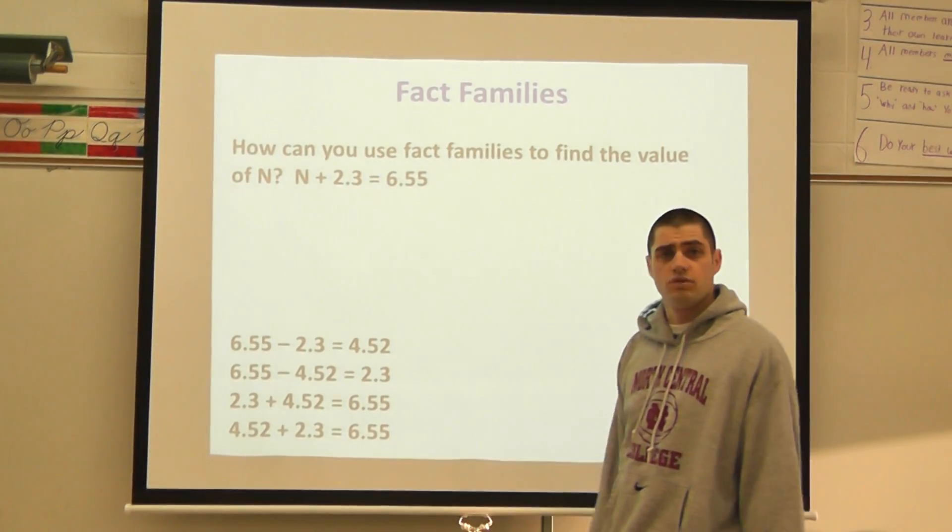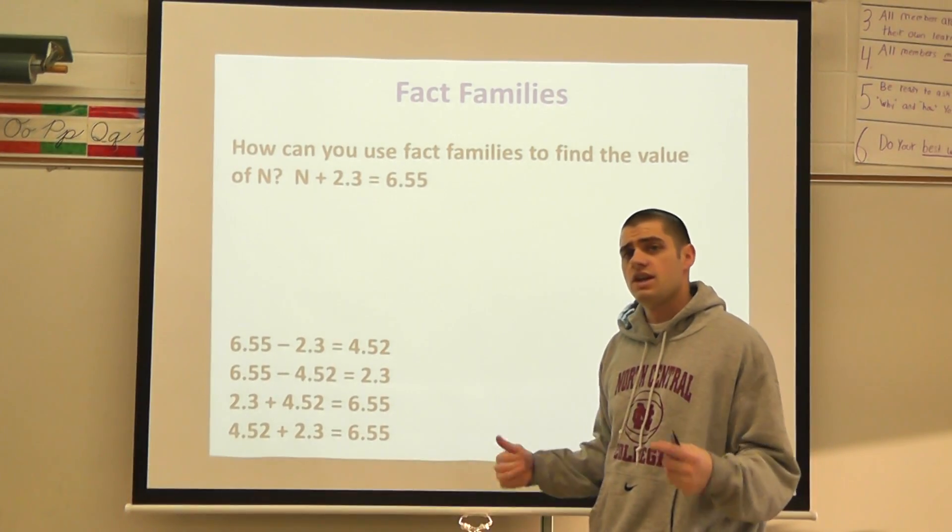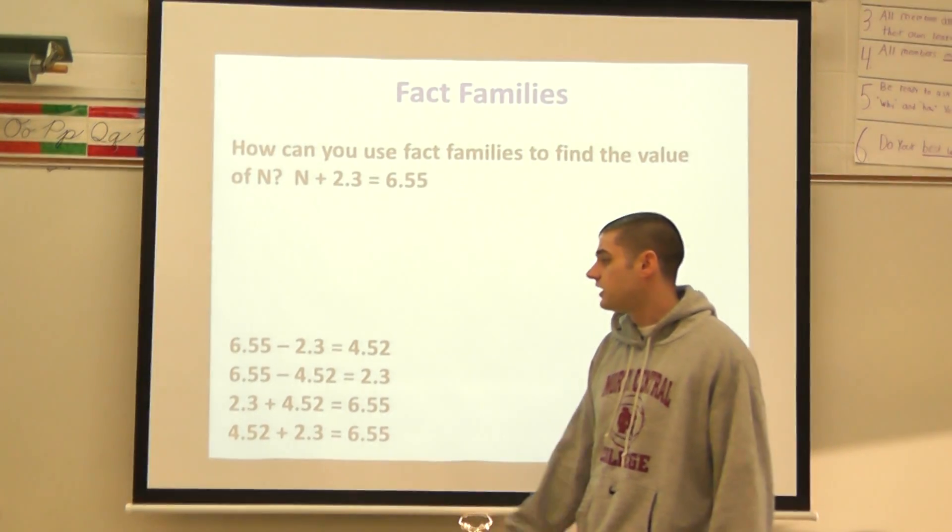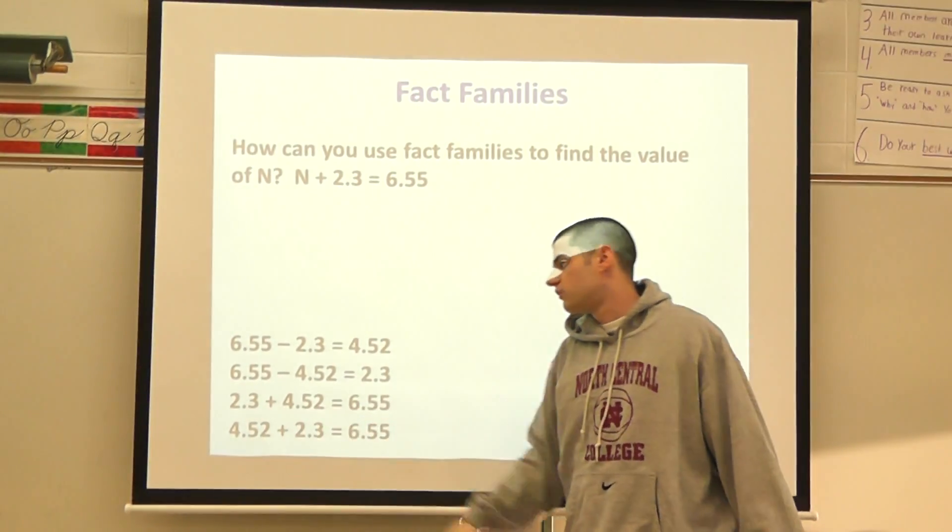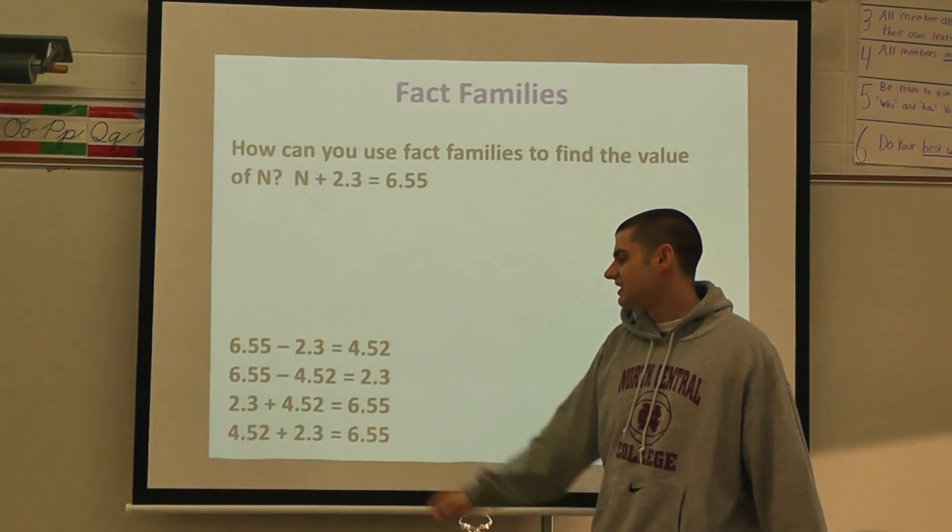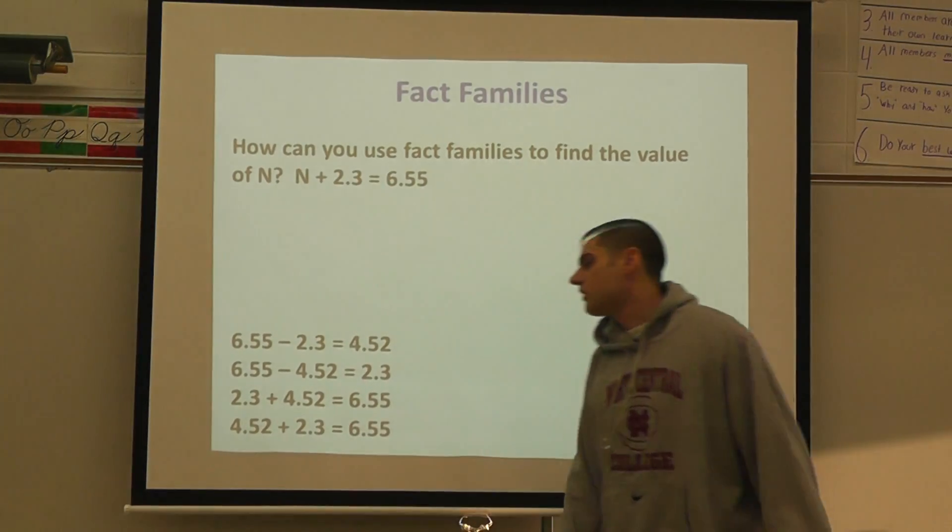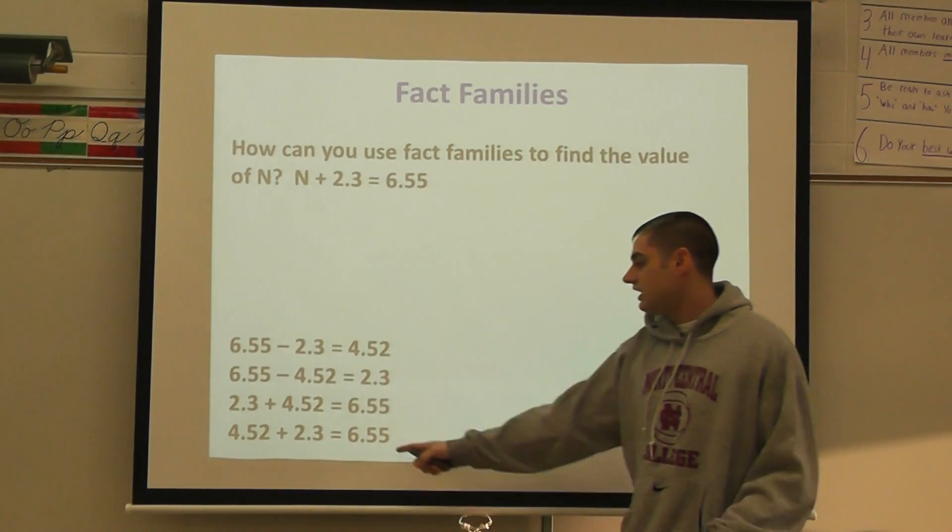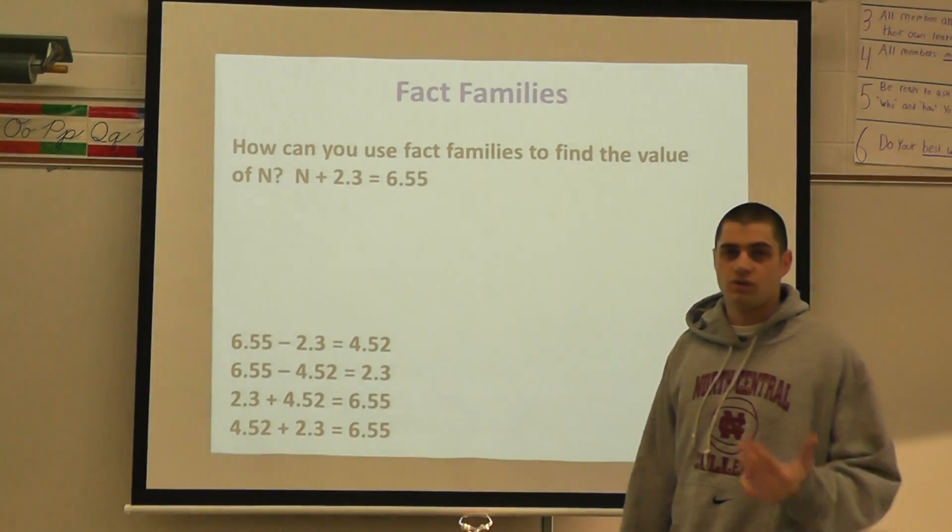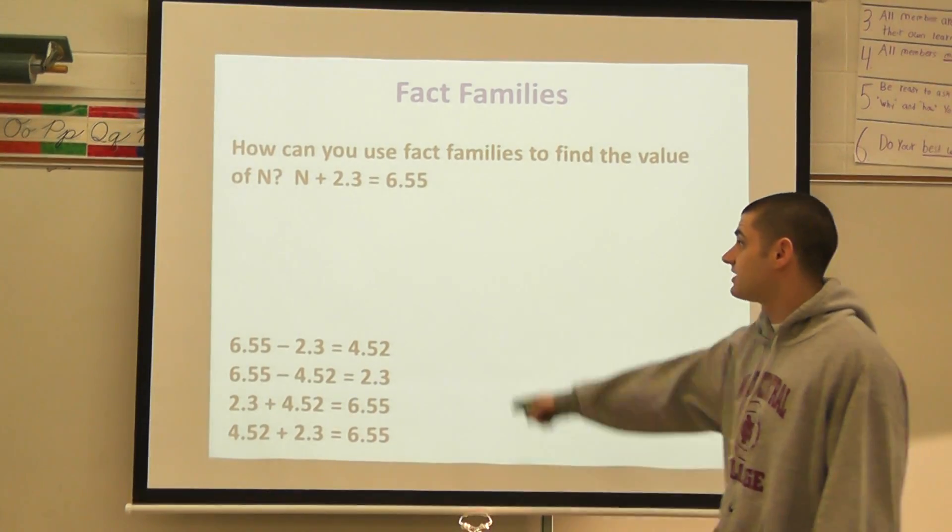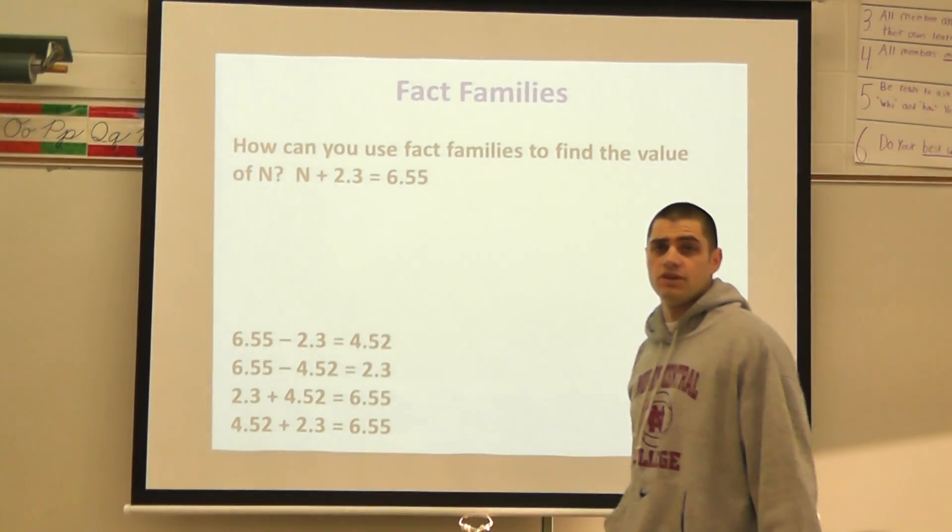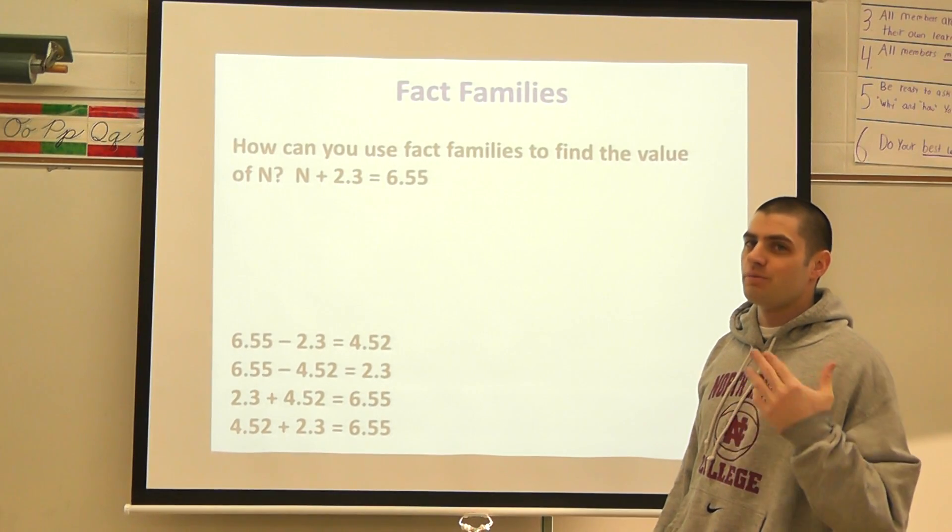2 and 3 tenths, or 2 and 30 hundredths, is the same number, it's just written a little bit differently. We talked about equivalent decimals or equivalent fractions—those are the same things there. Now I can do the addition side of it: 2.3 plus 4.52 is going to be 6.55, and 4.52 plus 2.3 is going to equal 6.55. So again, I used some of my background knowledge, what I knew about fact families, to help me solve this problem here.